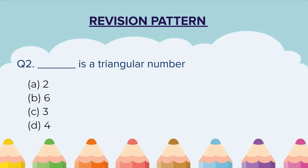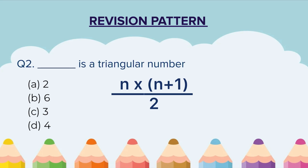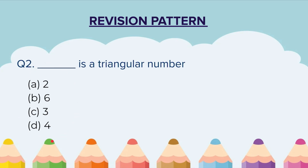Question 2: Dash is a triangular number. I hope you remember the formula of a triangular number. A triangular number is a number which can be represented as n(n+1)/2. A number that can be represented like this is called a triangular number. Choose your number out of these 4 numbers.